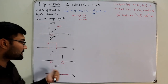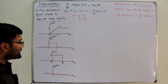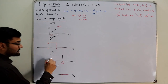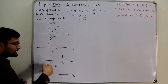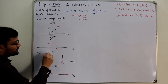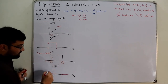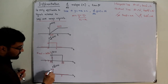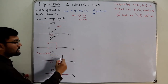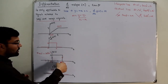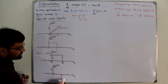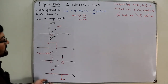These jumps — the discontinuities — are represented by impulses. The weight of each impulse is the final minus the initial value of the discontinuity. At t=0: final value is 4, initial is 0, so we have an impulse of weight 4. At t=2: final value is 0, initial is 4, so we have an impulse of weight negative 4.